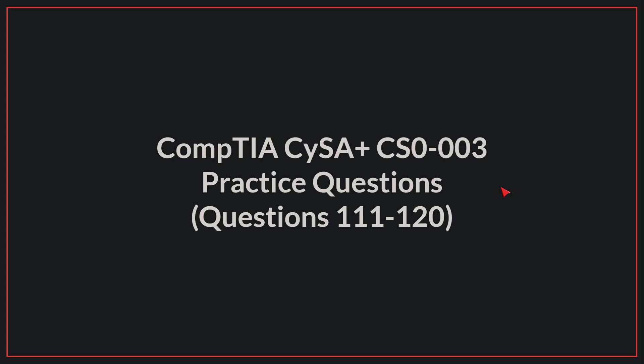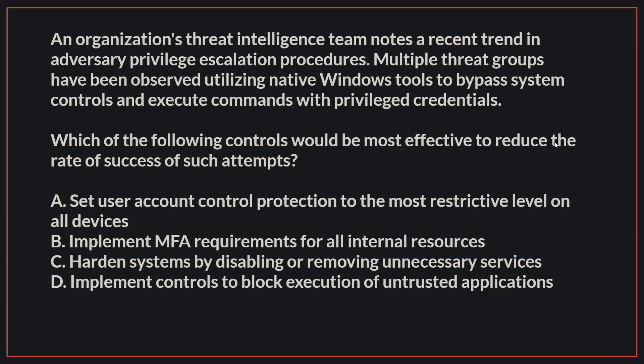Hello, today we'll be going to practice questions 111 to 120 for the CompTIA CySA+ exam. An organization's threat intelligence team notes a recent trend in adversary privilege escalation procedures. Multiple threat groups have been observed utilizing native Windows tools to bypass system controls and execute commands with privileged credentials. Which of the following controls would be most effective to reduce the rate of success of such attempts?